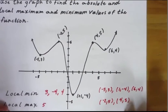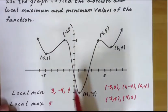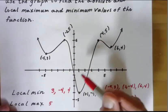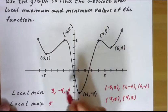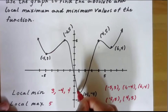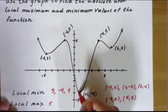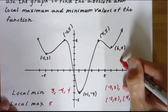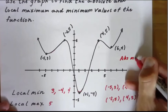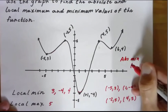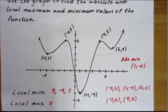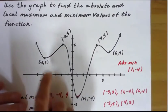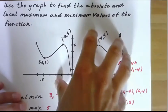Absolute max and absolute min would be the absolute largest or smallest value in the range. There wouldn't be a largest value because of these arrows — they're just going on forever. The smallest point on the graph, this would be the absolute minimum as well. We'd have an absolute minimum here at 1, so that would be the point 1, negative 4. Absolute is looking at the whole graph — what's the largest or smallest value on the graph? For locals, we look at little hills on the graph to see if they're going to be a local max or min.